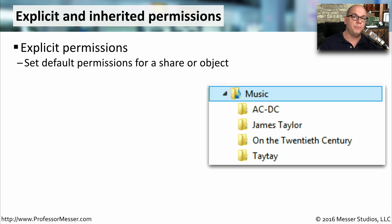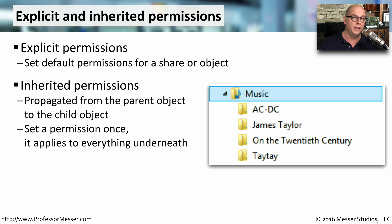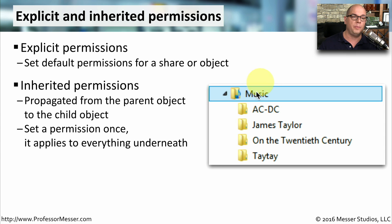When you bring up the dialog boxes for NTFS permissions or share permissions and set very specific permissions, we call those explicit permissions — meaning you're defining exactly what those permissions might be. For example, if I was setting permissions for a music folder, I would be defining exactly what the permissions are for that particular folder. There is also the concept of inherited permissions, which are propagated from the parent object. Once you set a permission on one folder, those permissions will apply for everything inside of that folder.